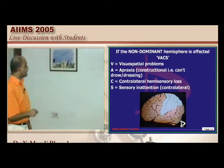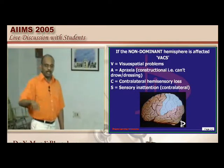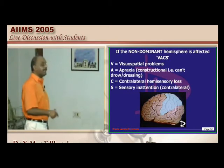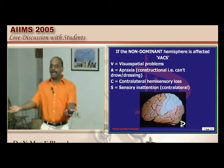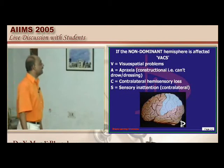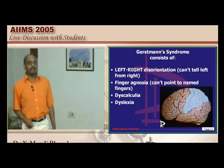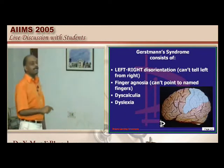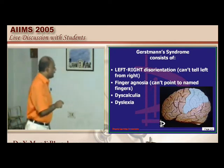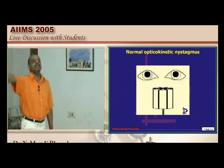The non-dominant parietal lobe mnemonic VAX: visuospatial abnormalities, A for constructional apraxia (inability to copy a star drawing), contralateral hemisensory loss, and sensory inattention (touching both hands simultaneously, the patient perceives only one). Gerstmann syndrome is a classical feature of dominant hemispheric involvement: left-right disorientation, finger agnosia (cannot point to named fingers), dyscalculia, and dyslexia.